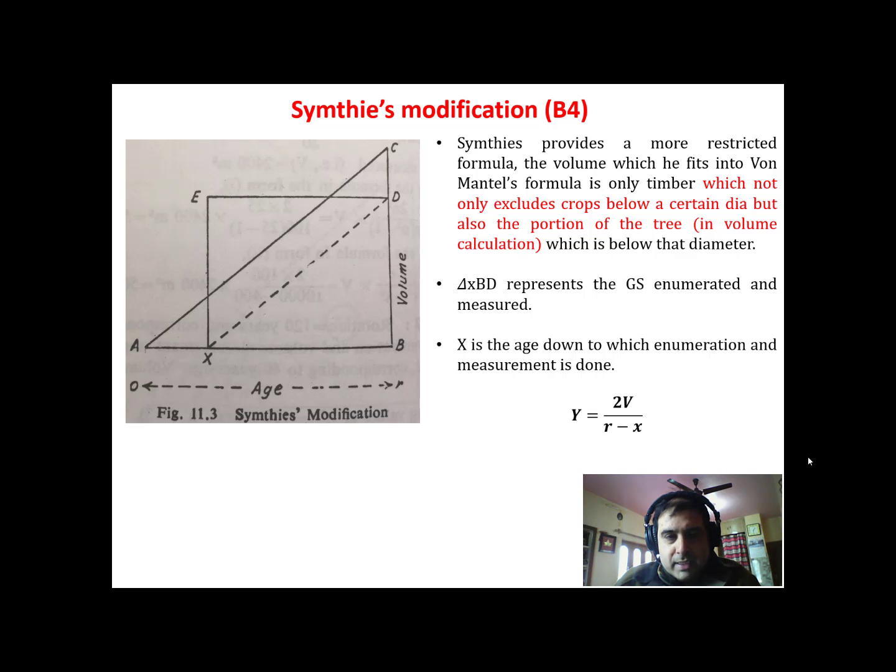He told us that we do not want to estimate growing stock for the diameter which doesn't have much role in the growing stock. He also excluded the portion of the trees which is above a certain diameter and which doesn't contribute significantly to the biomass.